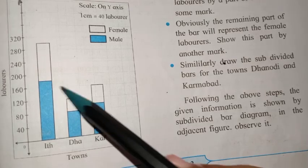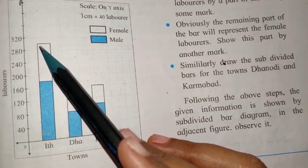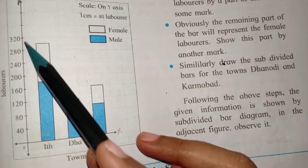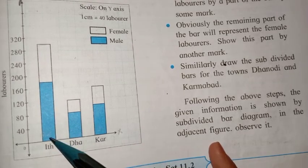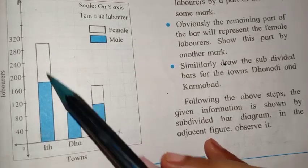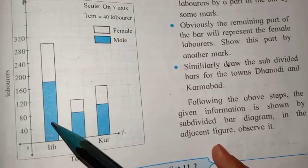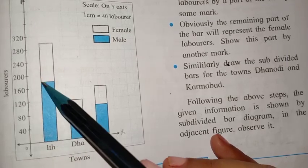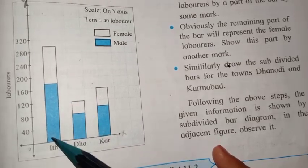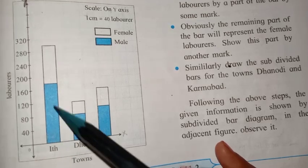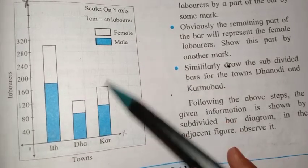For the first town Itlapur, total labourers are 300. This is 280 and this is 320, so in between the marking is 300. Draw this bar of 300. Out of this 300, how many female labourers are there? 120. And how many male labourers? 180. Mark on 180 — below this mark is the number of male labourers, so color it blue. The remaining 120 is female labourers.